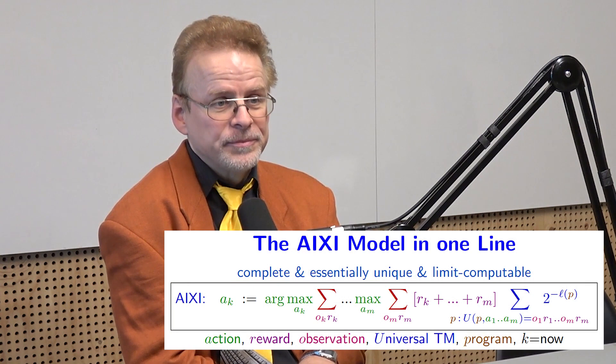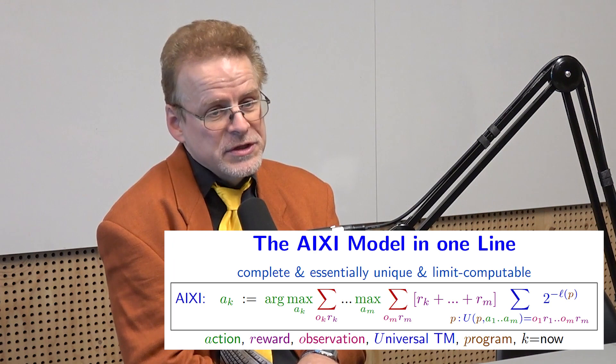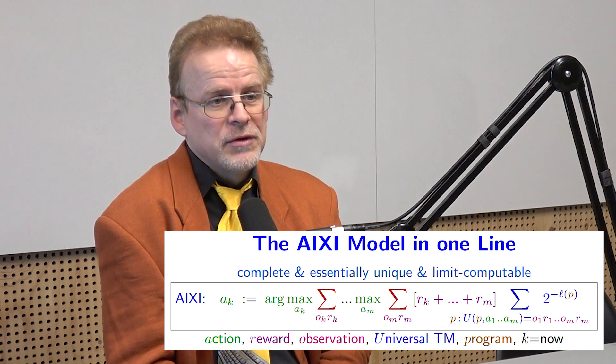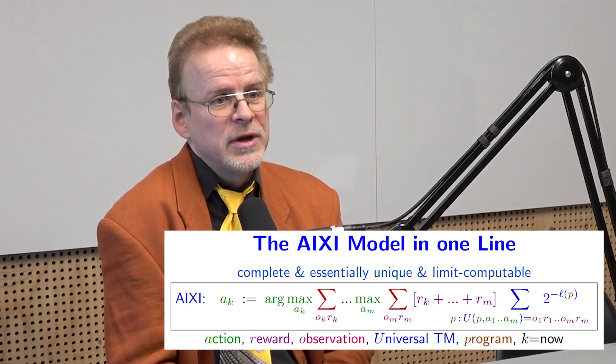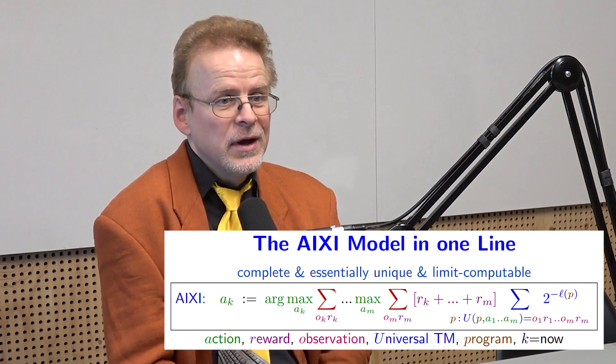Even if we can predict conditioned on actions, prediction is not all we want to do — we also want to act in the world. We need to choose actions wisely, not greedily just picking what is best in the next time step. We measure performance by giving the agent reward — the reinforcement learning framework. Every time step you give positive or negative reward; it could be very sparse, like in chess giving +1 for winning or -1 for losing at the end. The agent must maximize reward over its lifetime, not greedily.